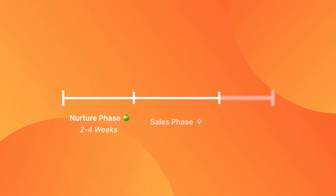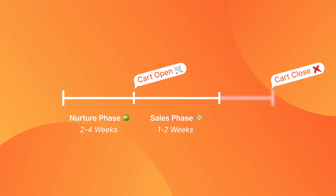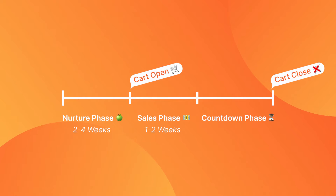The next phase is called the sales phase. Typically, this phase lasts one or two weeks and begins with the cart open. The cart open is the window of opportunity for customers to get any time-limited bonuses or discounts with their purchase of the course. By timeboxing the opportunity, you're making listening to your pitches a priority for your audience. People are busy and they need a reason to listen to your sales pitch.